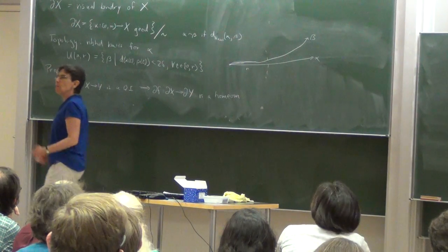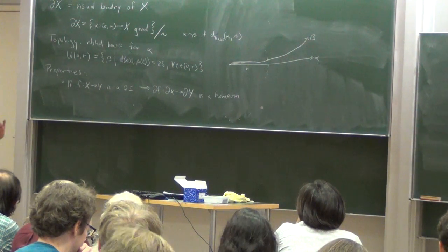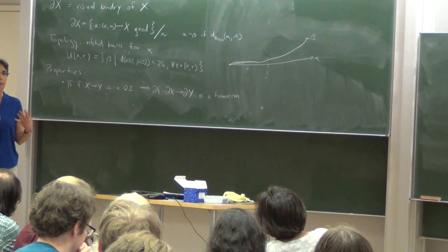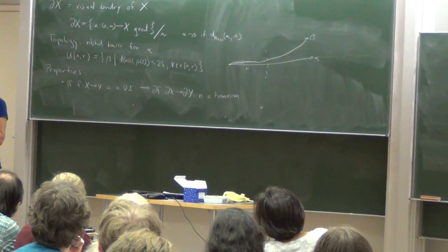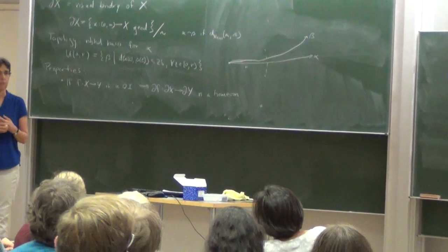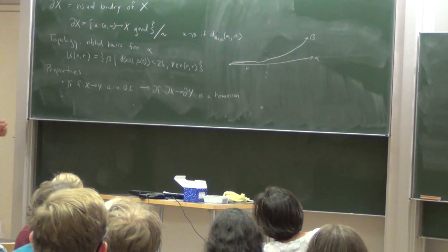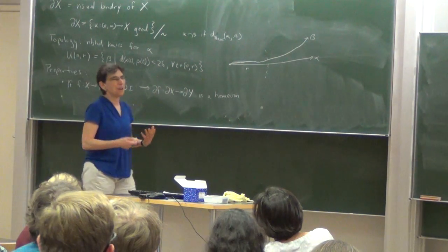So up to homeomorphism, the boundary is well-defined on quasi-isometry classes. In particular, we can talk about the boundary of a hyperbolic group. So this allows us to make sense, it's a well-defined notion of the boundary of a hyperbolic group. This is a key property.